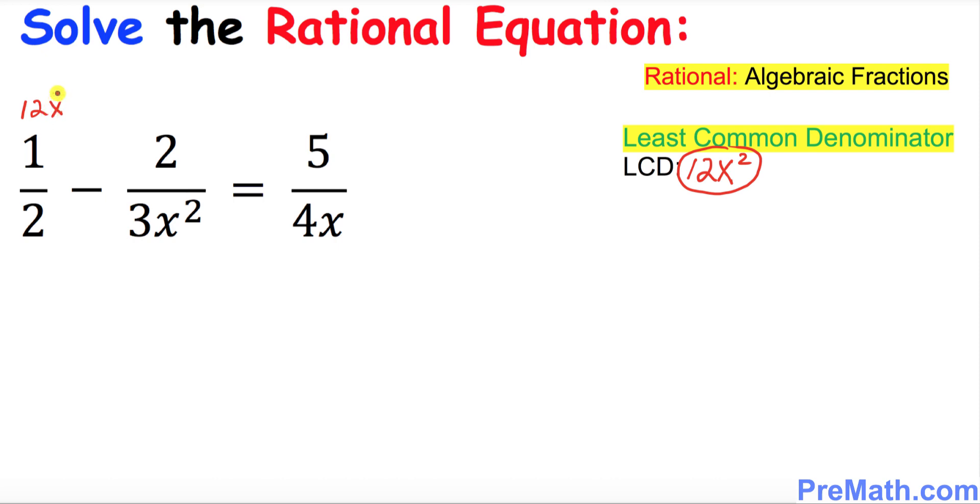I want to put down 12x square on the top of the first fraction, and then 12x square on the second term, and then 12x square on the third term. I just multiplied it across the board. Let's simplify this thing.